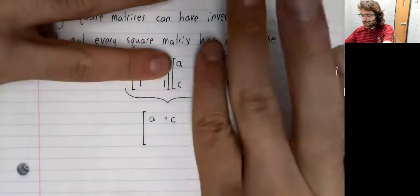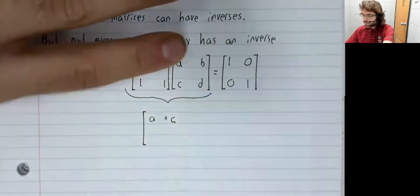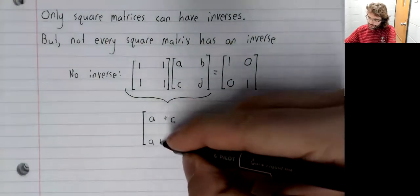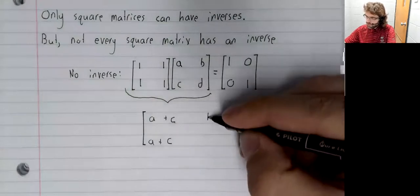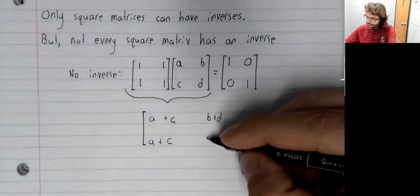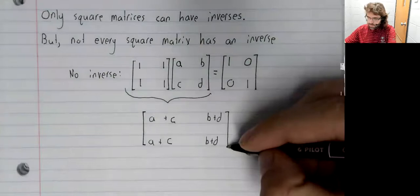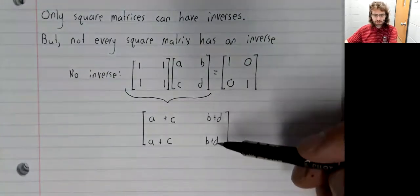Second row, first column: also A plus C. And B plus D for these entries.